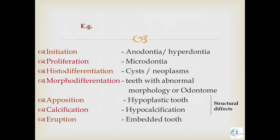A developmental anomaly can arrest at any stage of tooth development. For example, if it occurs at the time of initiation, it will lead to anodontia — partial loss of teeth — or hyperdontia — an increase in number of teeth. If it takes place at the time of proliferation, it will affect the size of the tooth and can lead to microdontia. If the defect occurs at the time of histodifferentiation, it will lead to the development of odontogenic cysts and tumors. If the defect is during morphodifferentiation, there will be abnormal morphology of the tooth leading to the formation of odontome. There can also be structural defects such as those of apposition, calcification, and eruption, which will lead to hypocalcified, hypoplastic, and embedded teeth.